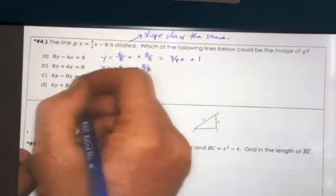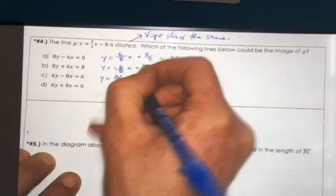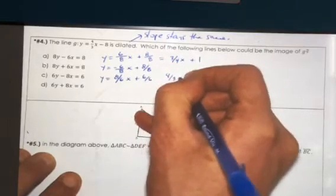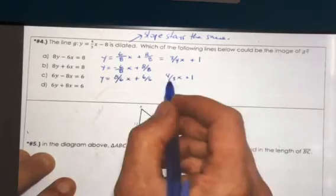Y equals eight over six x plus six over six, and when that one gets simplified, this is four thirds x plus one. That's definitely right. The slope is positive. We're looking for a positive slope.